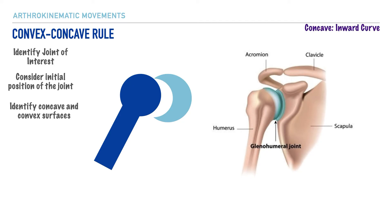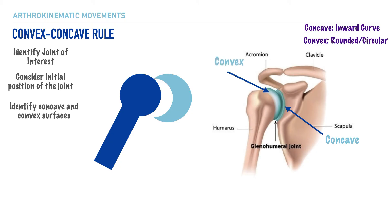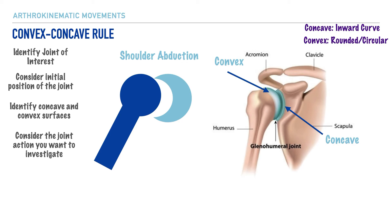We need to identify which portion is concave and which is convex. Concave means the surface has an inward curve, while convex means a rounded or circular structural component. The glenoid cavity is concave, and the humeral head is convex. For shoulder abduction, the humerus curves up and outward as indicated by the arrow. Here the convex structure is in motion while the concave structure is relatively stationary.